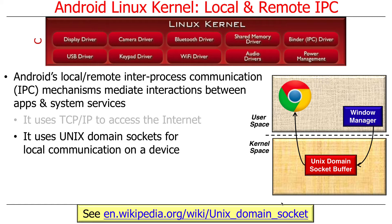We'll talk a bit more about this if you take the course next semester. For now, just imagine there's a mechanism that allows things running in one process to communicate with things in another process by passing messages that go through the operating system kernel. This is optimized for intra-host inter-process communication — in other words, things that are on the same device.